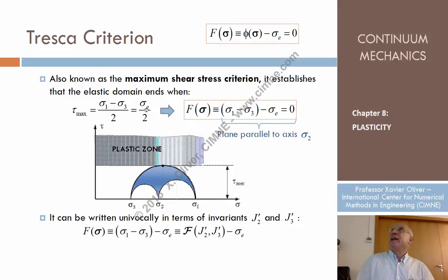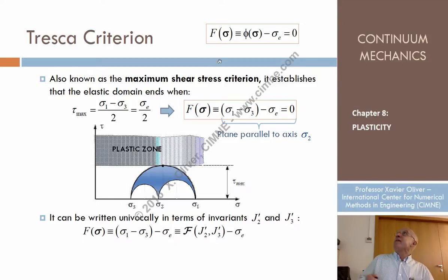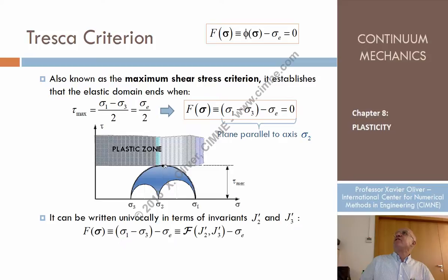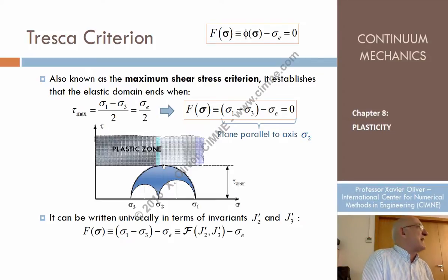Let's look for a while at the Mohr space, tau-sigma in 3D. Imagine that we have the three principal stresses. We build the Mohr circle. What is the maximum shear stress achieved at the point?